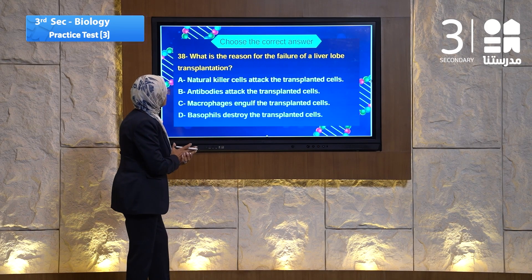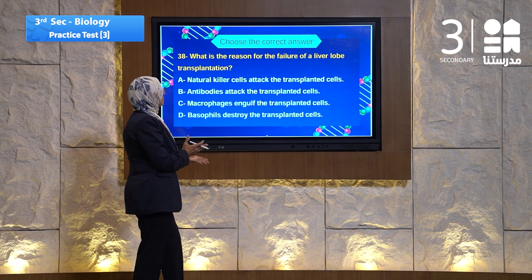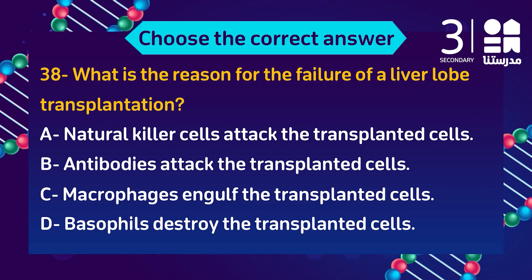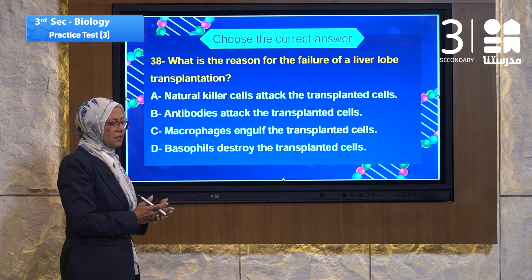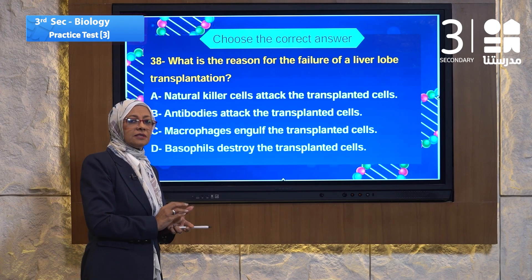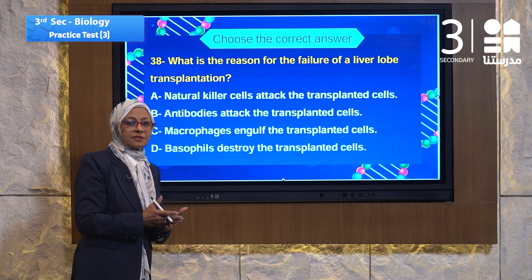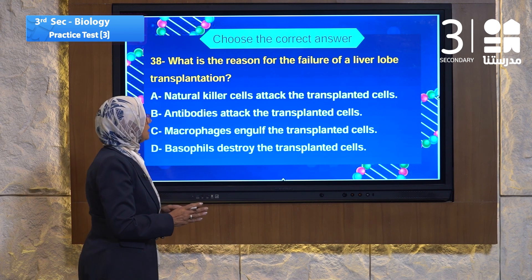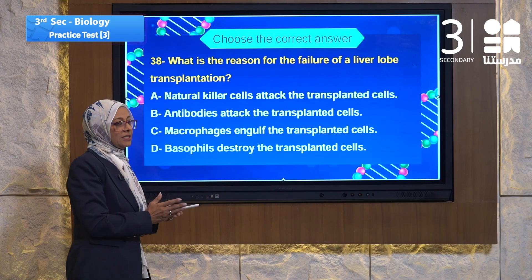Let's go to question number 38. Question 38 speaks about transplantation — not reproduction, that's immunity. What is the reason for the failure of liver lobe transplantation? There are many processes to transplant an organ inside a living organism's body. One of them is that the organ may be rejected by the body.